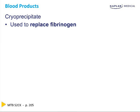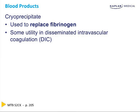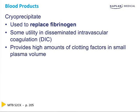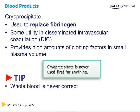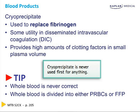Cryoprecipitate is a pooled blood product used to replace fibrinogen, with some utility in disseminated intravascular coagulation. We rarely use it anymore and it's never first for anything. It provides a high amount of clotting factors in a small volume — about 50% of the clotting factors in 10% of the volume. It won't contain factor 8, 9, or von Willebrand's factor. Whole blood is absolutely never correct — zero right answers. Whole blood is divided into packed cells or FFP, so it's never the right answer on your exam.